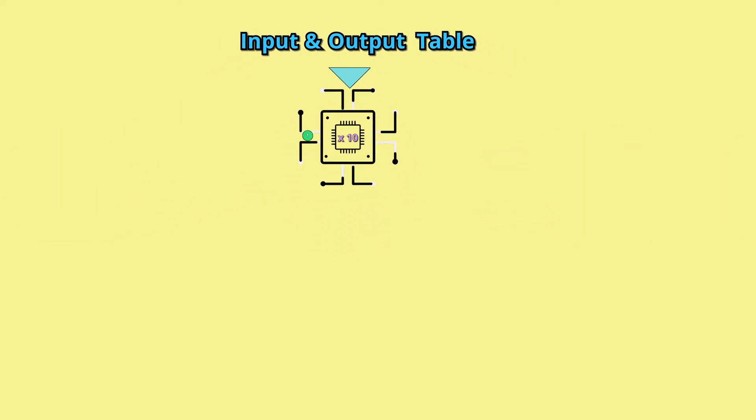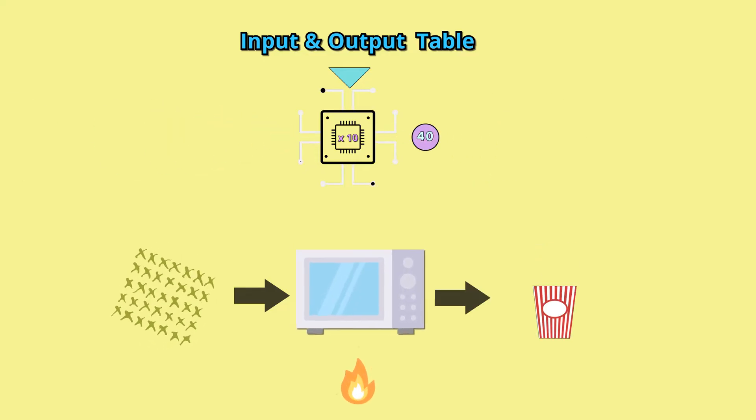Think of an oven or a microwave. We often place things in a microwave or an oven and once heat is added something different comes out. For example, kernels are placed in a microwave and after adding heat popcorn comes out.